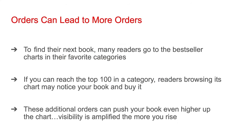To find their next book, many readers go to the bestseller charts in their favorite categories. If you can reach the top 100 in a category, you're going to appear on its chart. Readers browsing that chart may notice your book and buy it. These additional orders can push your book even higher up the chart — visibility is amplified the more you rise. So getting your book onto a bestseller chart may only be the beginning of a sales boom for that book.